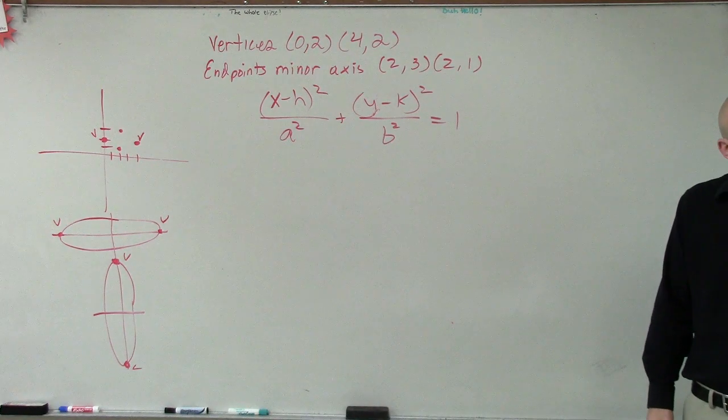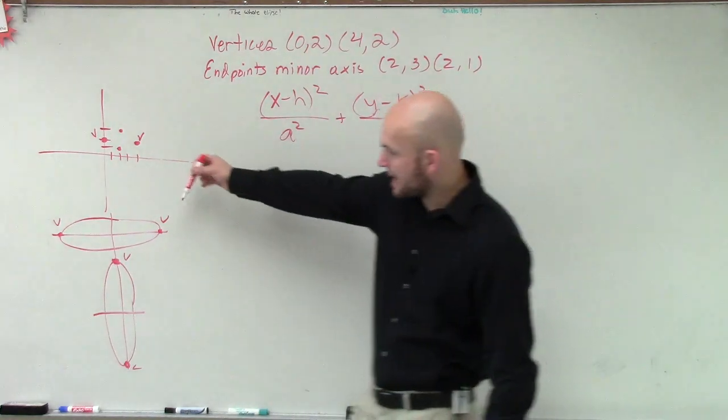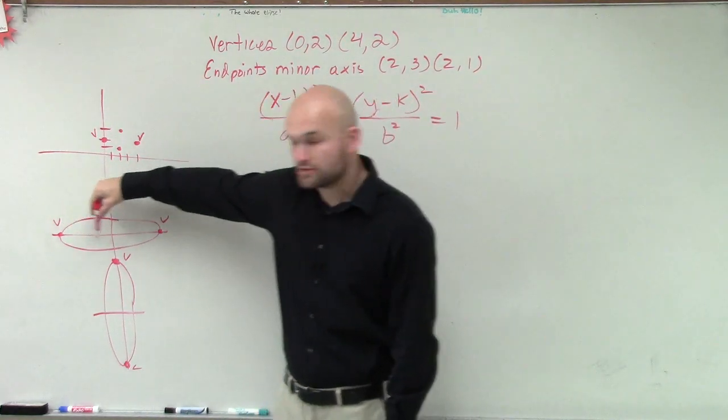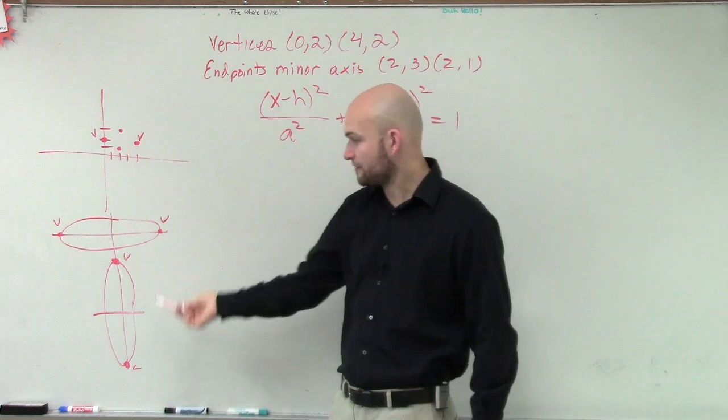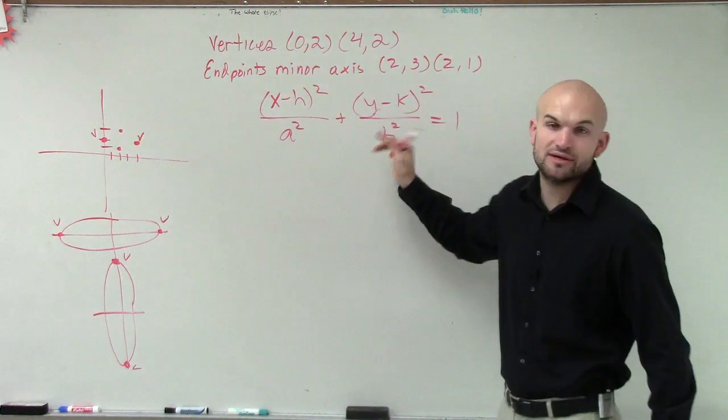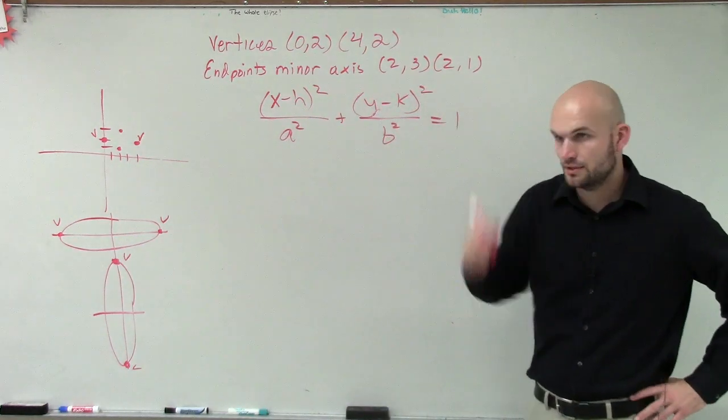Wait, what about the major axis? The major axis, which is your a, this right here. Okay. If it's horizontal, then that's the one you use. If it was vertical, then your a and b would be swapped. Oh. Alright.